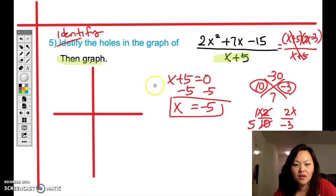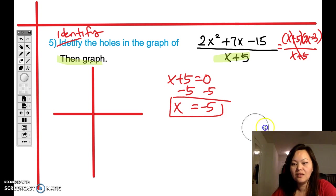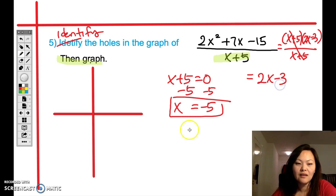And then of course our denominator is x plus 5, which is going to get cancelled out. So what are we really graphing? Let me erase all of this. We are basically graphing the graph of 2x minus 3.